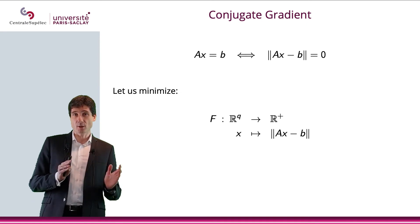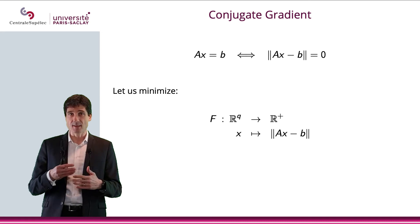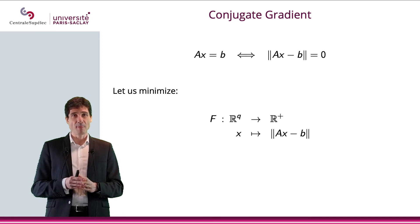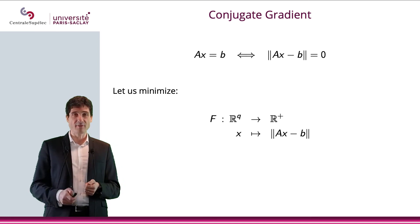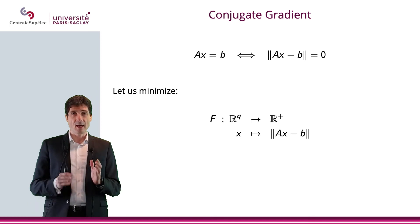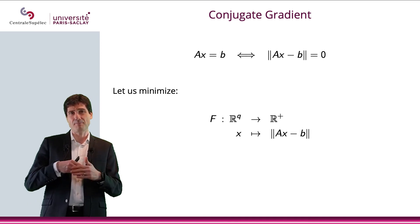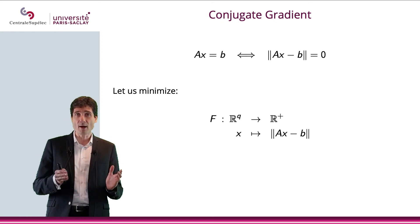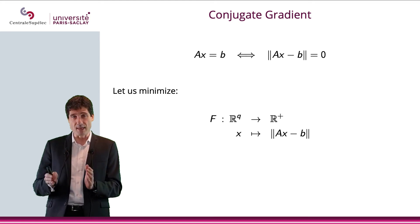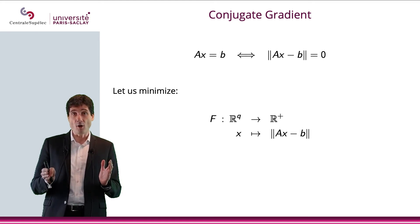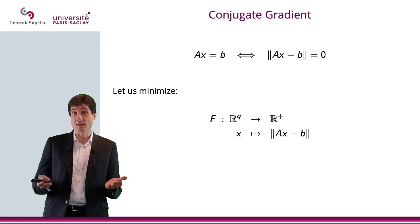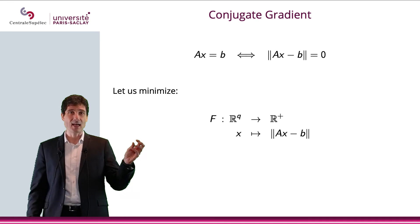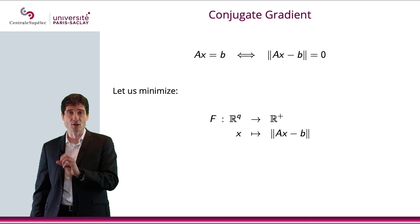Now, what we saw is two iterative methods that use this concept of having this Mx_{n+1} equals Nx_n plus b. There is another possible iterative method called the conjugate gradient. And basically, actually, it's considering the problem as an optimization problem. I mean, if you are trying to solve Ax equals b, then the norm of Ax minus b should be 0, right? So if you really look at the function that takes an x and associates the norm of Ax minus b, then that function, if you find the minimum, and hopefully the minimum will be 0, then you actually find the x that will satisfy the minimum, the arg min, will be the solution to our system.